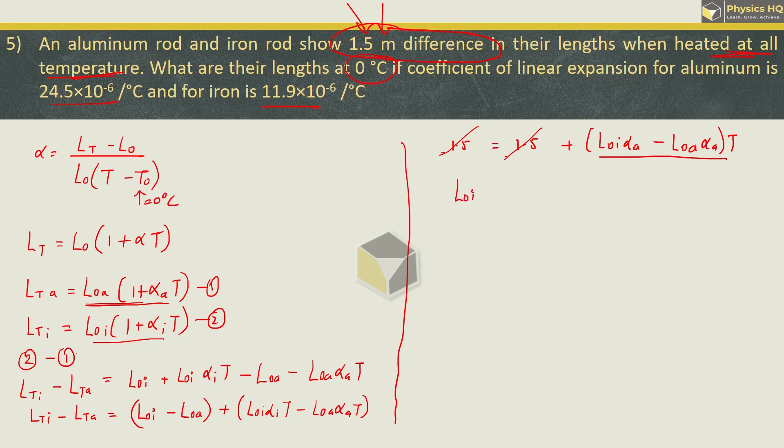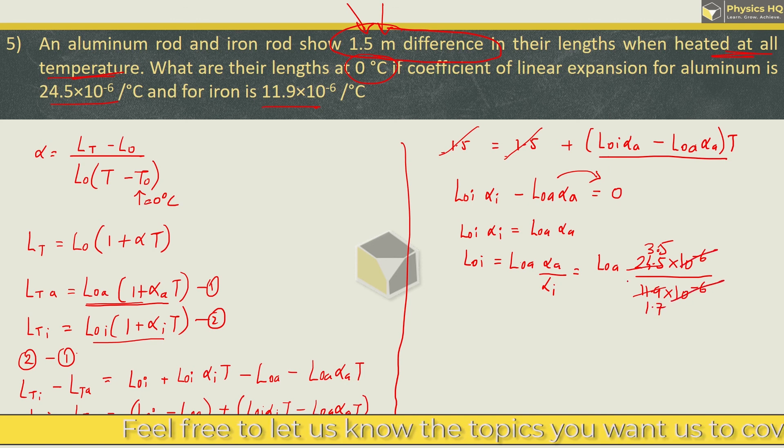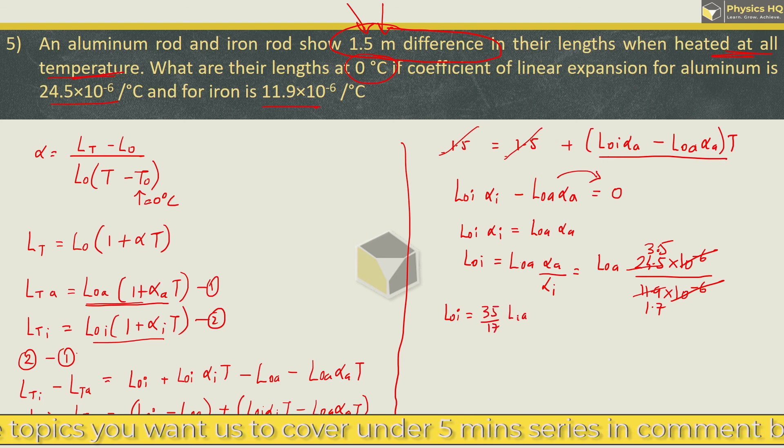We will substitute in this equation 1.5. The difference in lengths is 1.5 at all temperatures. Either on both sides it will be 1.5 or minus 1.5. If the length of iron is greater, the difference will be plus 1.5. So what we are left with is this term equal to 0, temperature also becomes 0. So we are left with length of iron at 0 equals length of aluminum at 0 times alpha a upon alpha i. Now we know the values of alpha a and alpha i. Let us put it over here: 24.5 into 10 raised to minus 6 divided by alpha i which is 11.9 into 10 raised to minus 6.